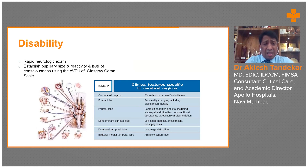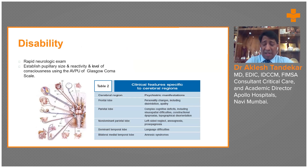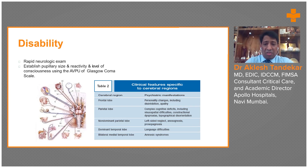When assessing disability, rapid neurological examination, GCS scoring, and pupillary examination is very important. If the patient is conscious, we should ask about allergies, vomiting history, any past medical illness, and the mechanism of injury if the patient is able to brief us.